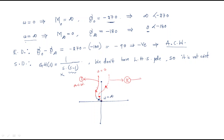Two plots are possible. The first plot doesn't touch the imaginary axis, while the second plot touches the imaginary axis at -270°. To check which is valid, find the frequency at which the phase equals -270°. Set the phase formula equal to -270°: -270° + tan⁻¹(ω) = -270°.